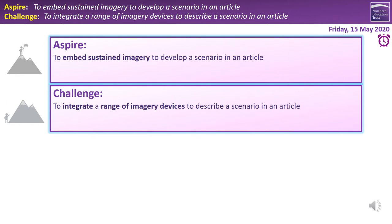As we move into article writing from speech writing, our challenge is to integrate a range of imagery devices to describe a scenario in an article. Imagery devices are what we were using in weeks one and two with descriptive and narrative writing. Those same skills are transferable to articles, and I'm going to show you how to do that today. We're also going to aspire to embed sustained imagery to develop a scenario in an article — creating a future presentation of what life might be like, or describing a scenario so we can understand someone's situation. By embedding, we mean it's seamless — it's hard even to notice we're using these devices. We're not putting them in big flashing lights saying 'look, I've used personification.' We're just using it as part of our natural everyday writing, and that's what makes it even more sophisticated.